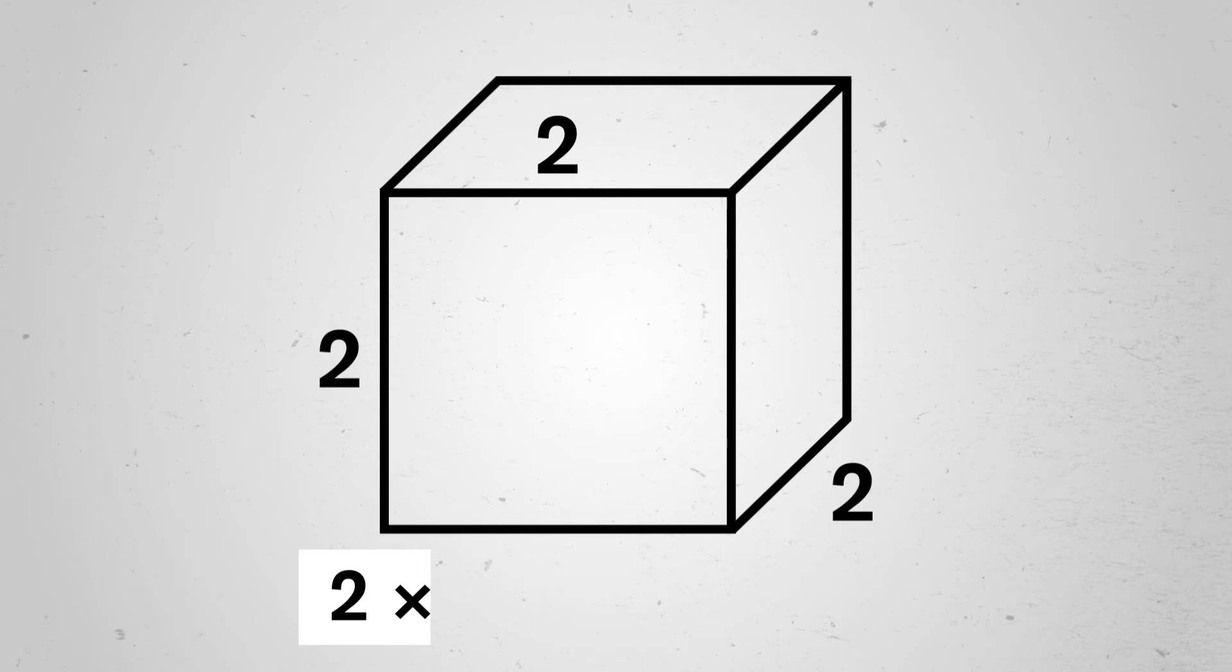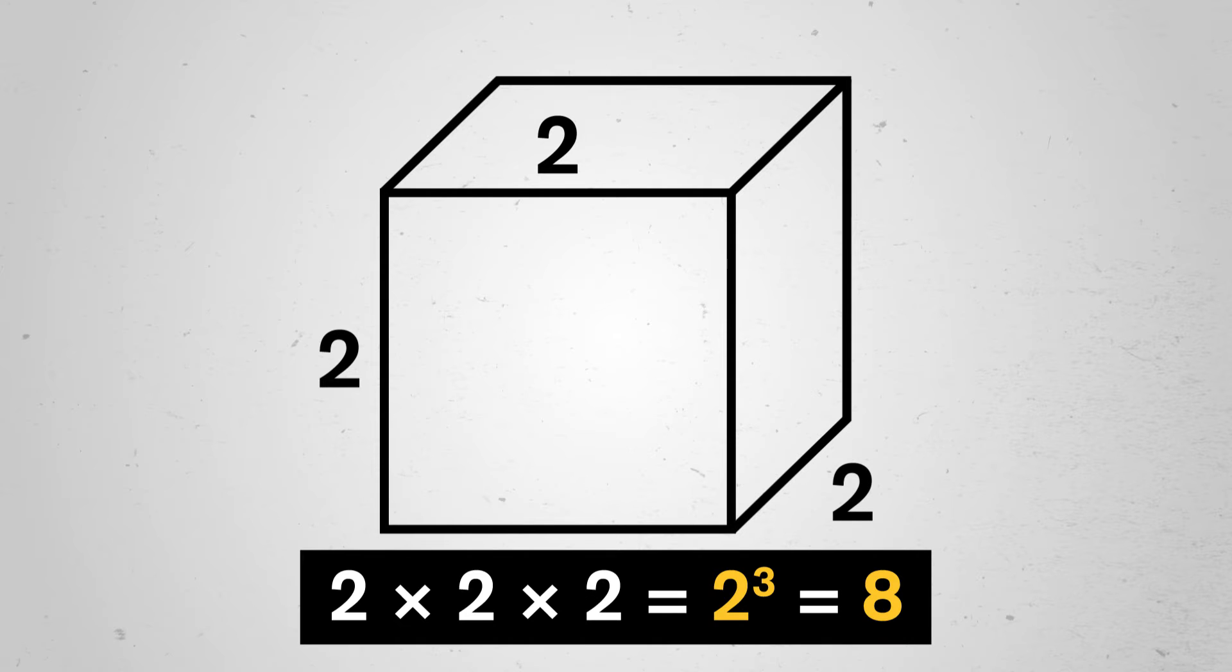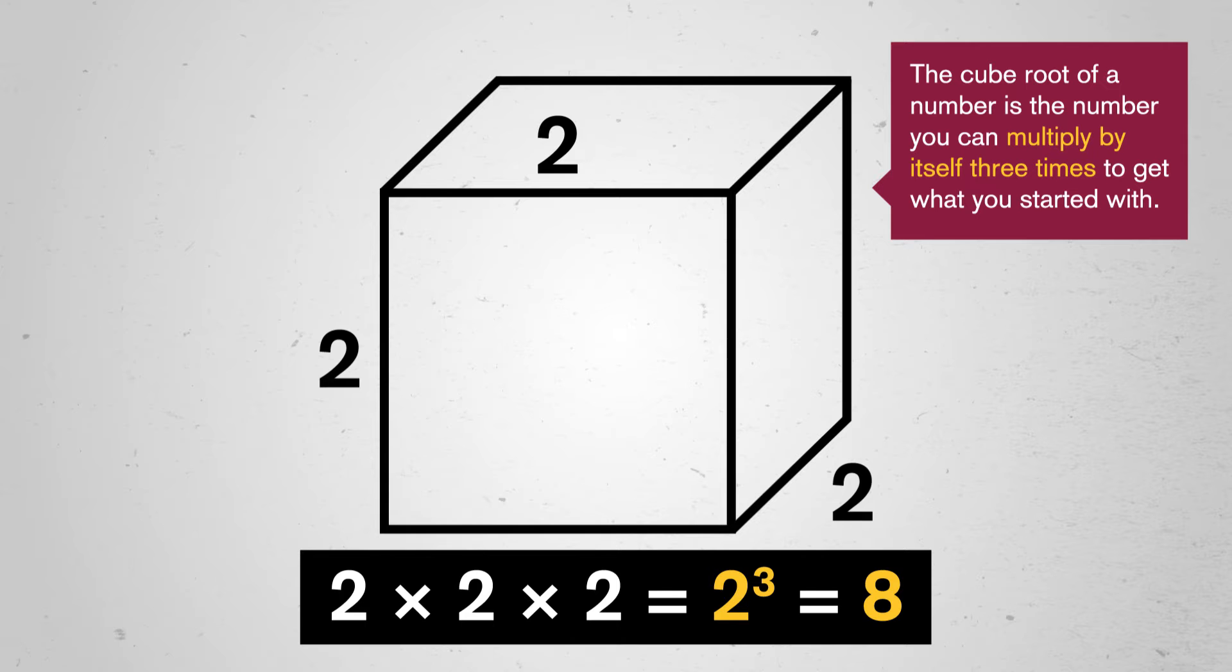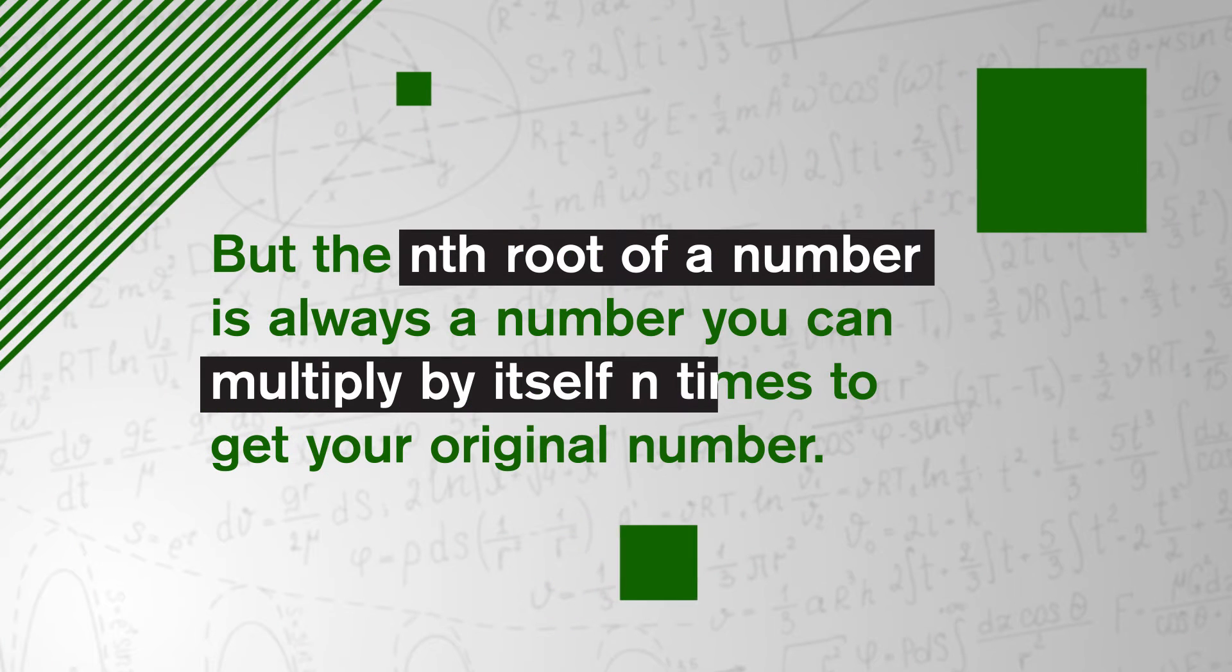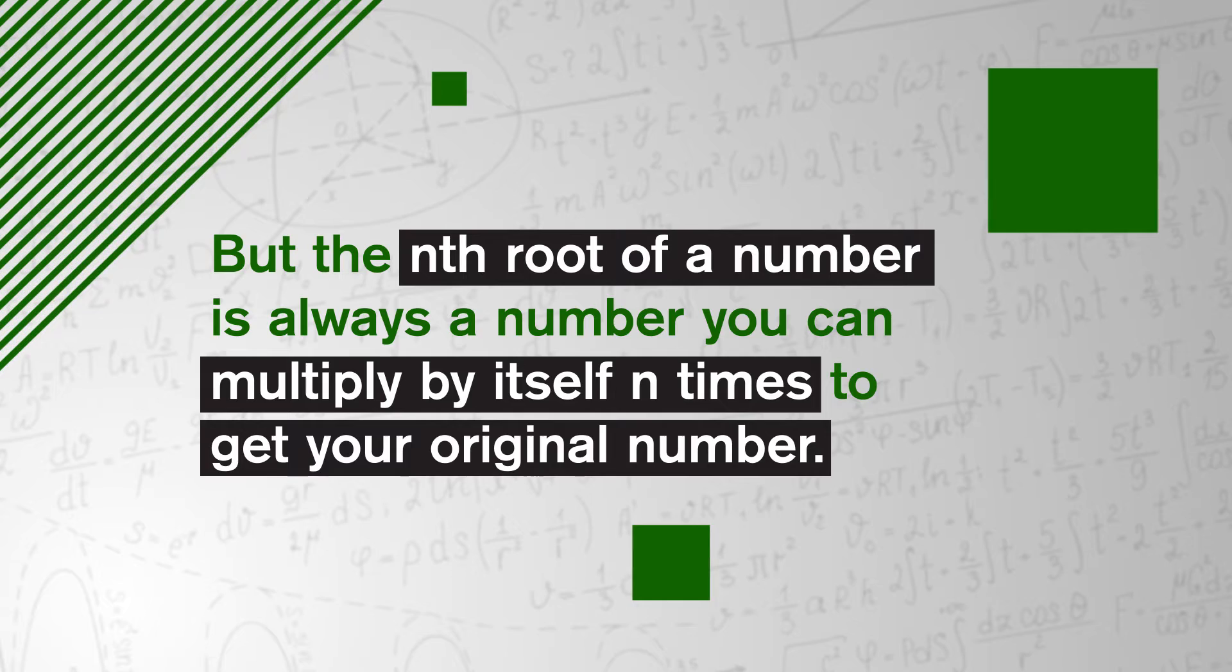And cubes work the same way. Just think about volumes instead of area. A cube with side length of 2 has a volume of 2 times 2 times 2, or 8 cubic units. The cube root of a number is the number you can multiply by itself 3 times to get what you started with. Now, we can't easily visualize dimensions after 3, so we don't have a special term for 4th roots or 5th roots, or anything after cubes. But the nth root of a number is always a number you can multiply by itself n times to get your original number.